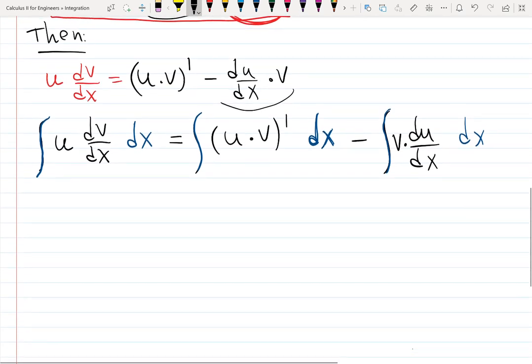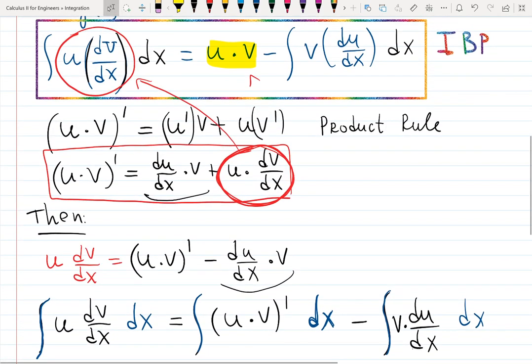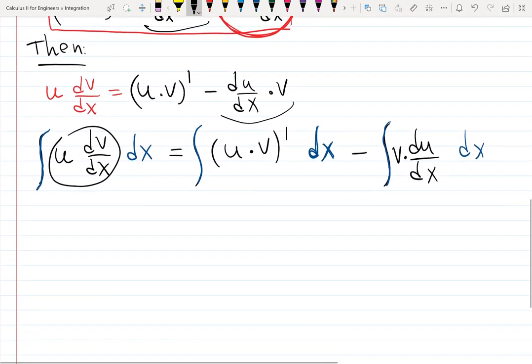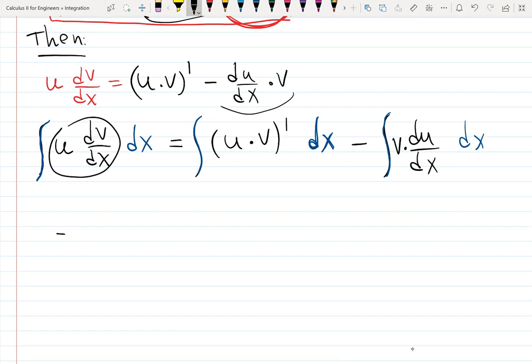We're actually almost done. We're literally integrating u dv/dx. Since integration undoes differentiation, what's going to happen if I'm integrating the derivative of u times v? I will end up with u times v, because this integral undoes the derivative.